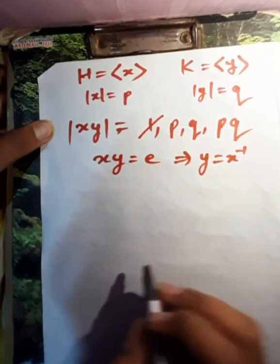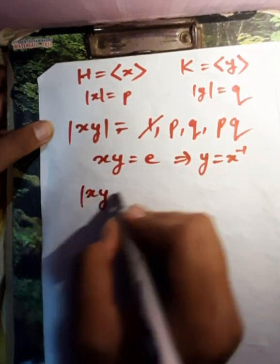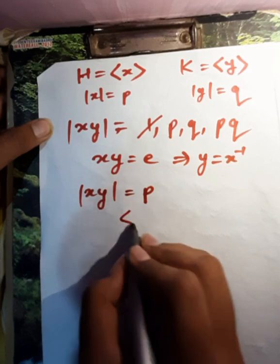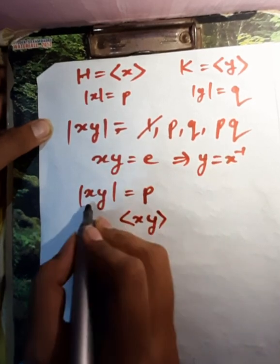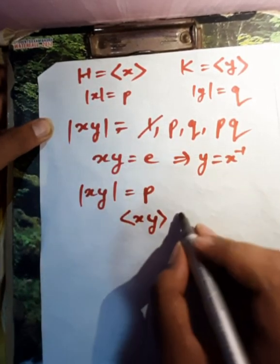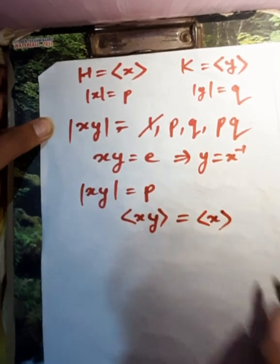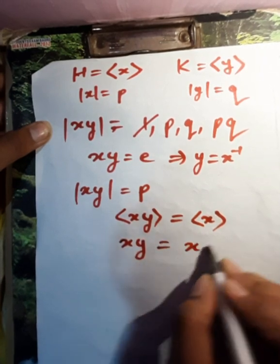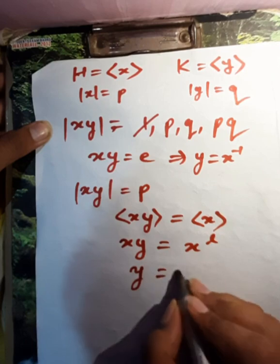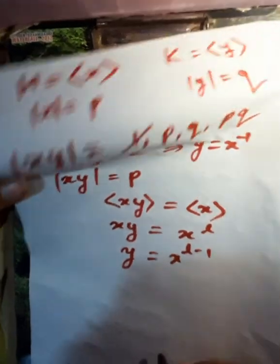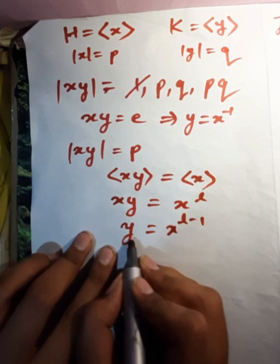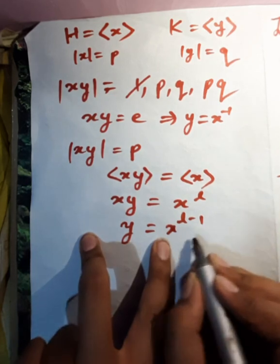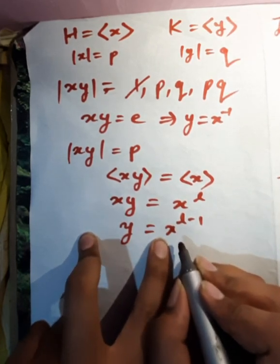For the second case, if xy has order p, then the subgroup generated by xy is a Sylow p-subgroup, and since there is a unique Sylow p-subgroup, we get xy equals x, which implies xy equals x to the power l for some l, which implies y equals x to the power l minus 1. Again, order of y is q, and order of x to the power l minus 1 divides order of x, which will be either p or 1, which is not q.